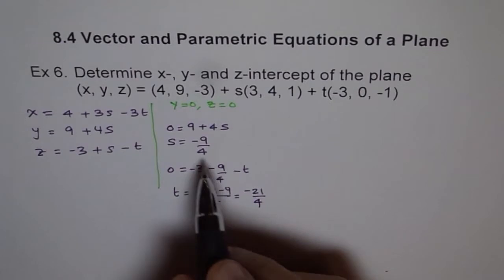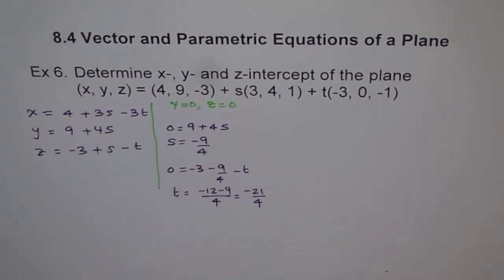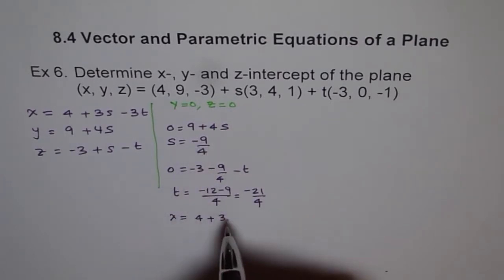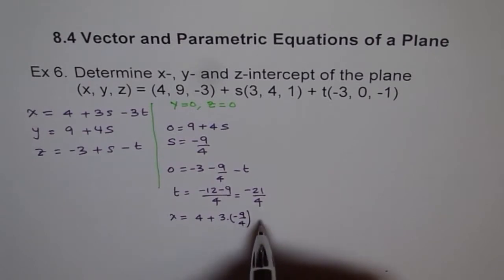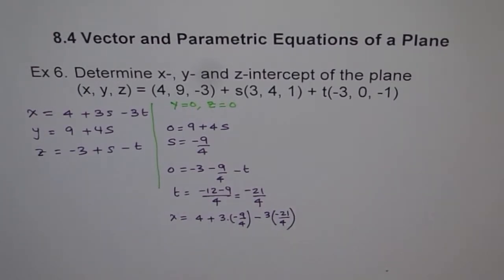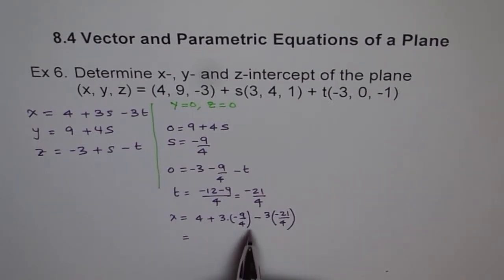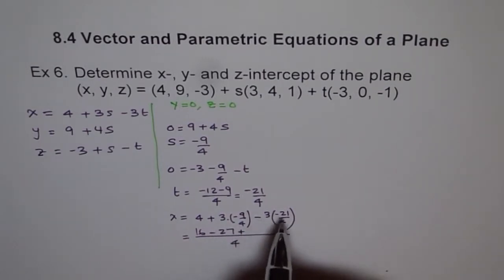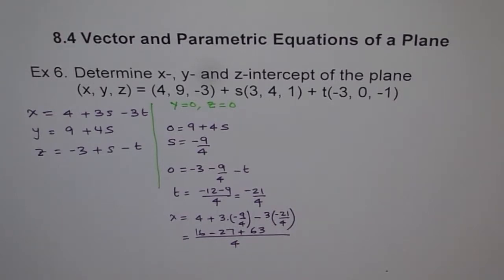Now plugging S and T into the x equation: x equals 4 plus 3 times minus 9 over 4, minus 3 times minus 21 over 4. Taking 4 as the common denominator, this becomes 16 minus 27 plus 63, all over 4.